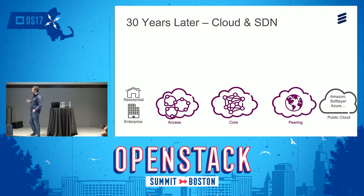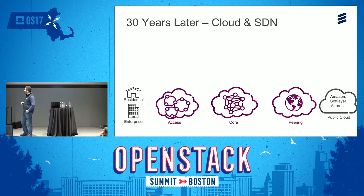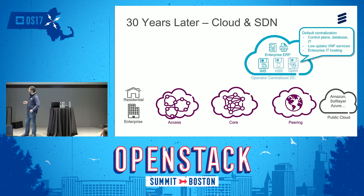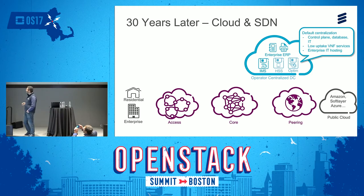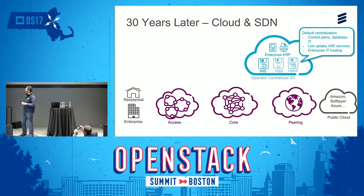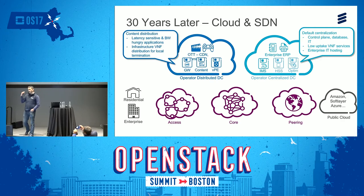In a typical service provider network, you have your access layer — enterprise, residential, mobile — then a core layer, some peering points where you connect to internet and public cloud services, and data centers. The new thing with NFV is they will add requirements in terms of performance, redundancy, and the type of application, how you onboard the application on top of that OpenStack instance. We see those centralized data centers focused on IT and the first wave of virtualization, but also plans from operators to create more distributed data centers for NFV.